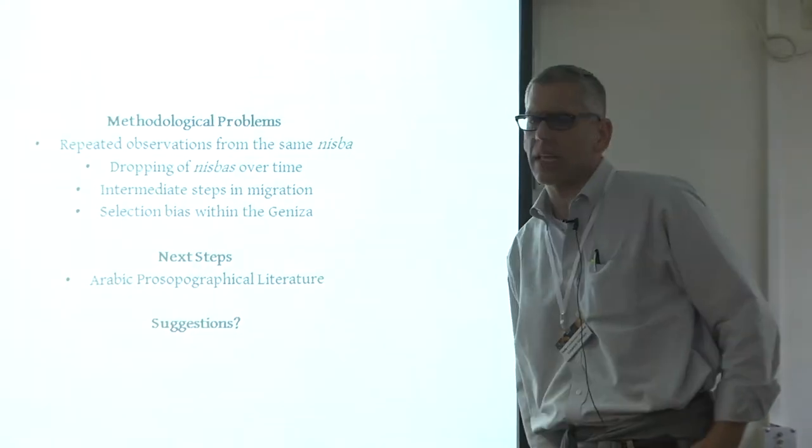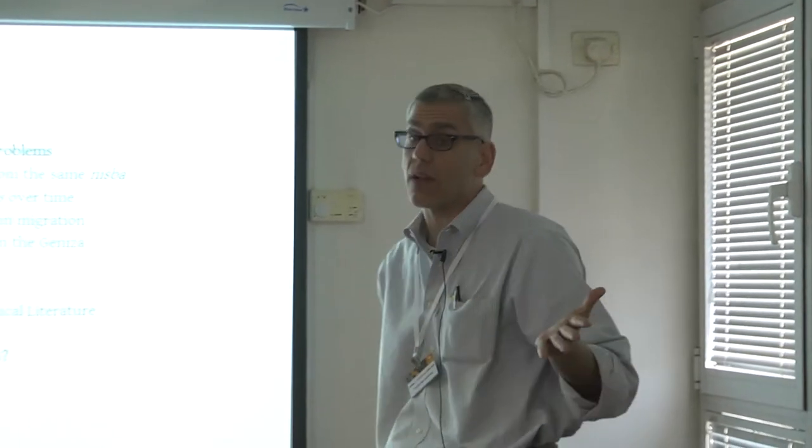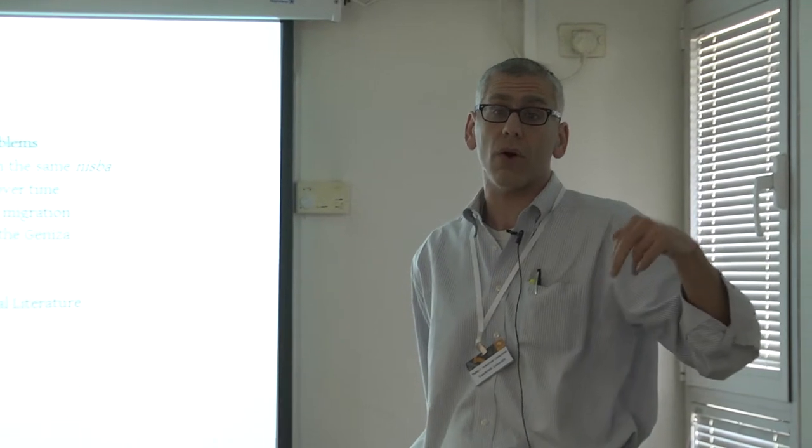Finally, there is selection bias within the Geniza. I made the radical assumption that all documents in the Geniza were speaking about folks who were in Egypt — which of course they are not. Additionally, the Geniza documents come from a particular stratum of society. Ashtore's study came from donor lists or lists of charitable recipients. If migrants were from the lower strata of society, can you really identify a massive migration as a percentage of the whole population?